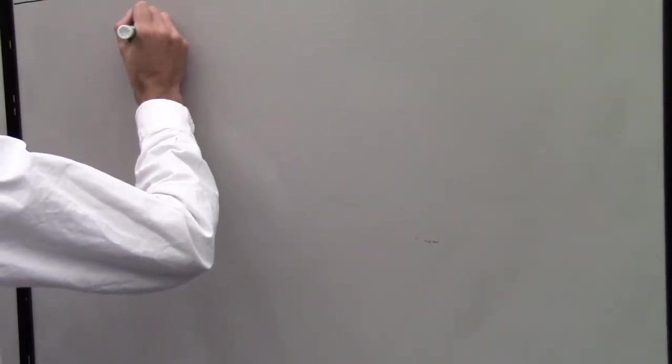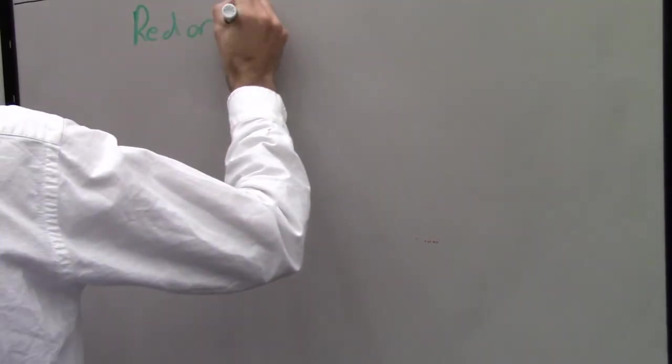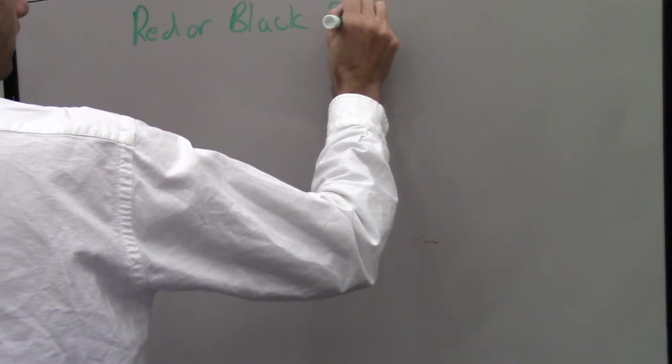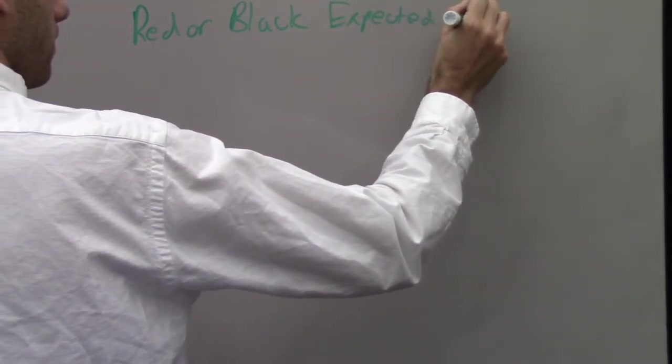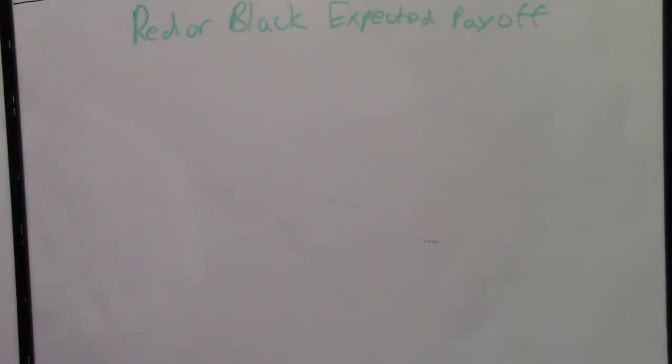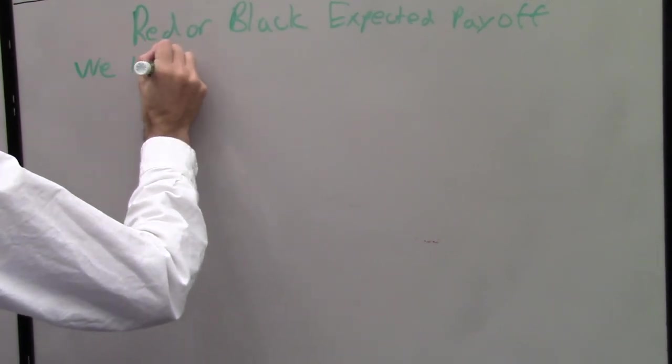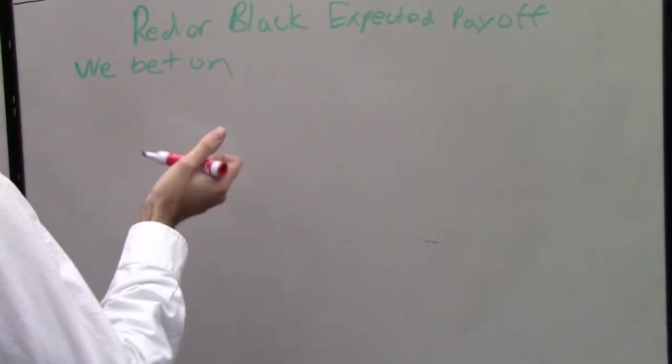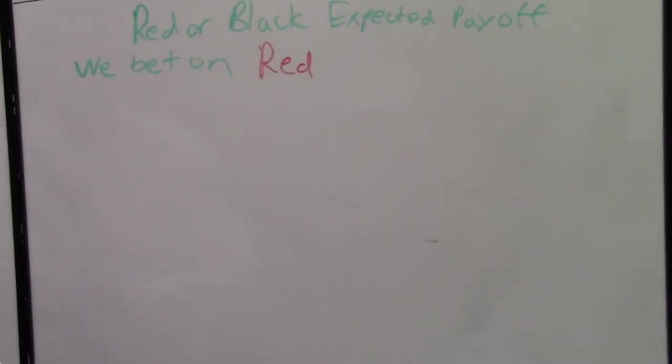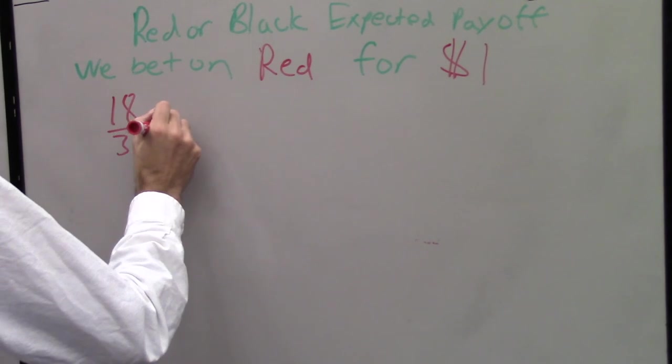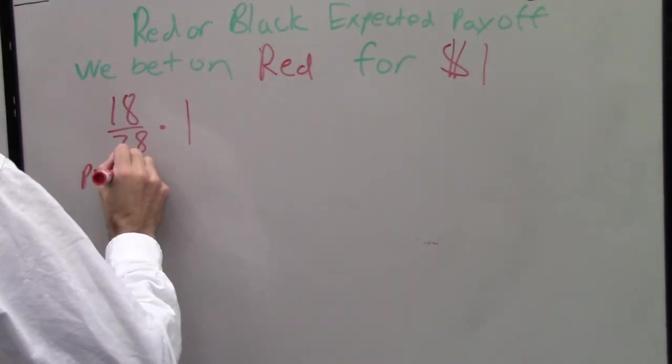Our second example is an outside bet, specifically the red or black bet. We bet on red for $1. The probability of landing on red is 18 over 38. We multiply 18 over 38, the probability of a red number, times 1, the payoff of winning.